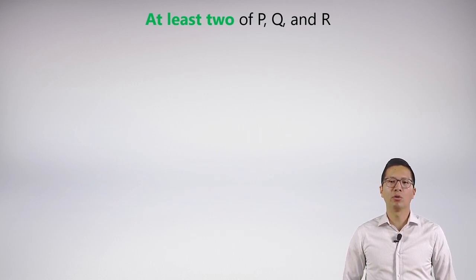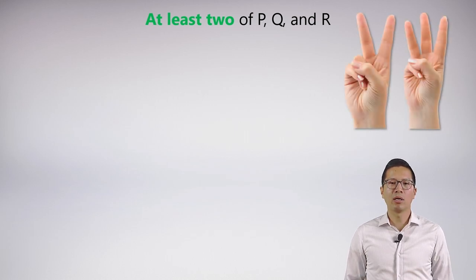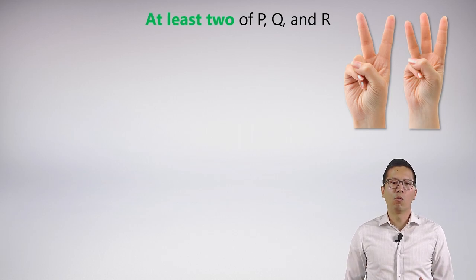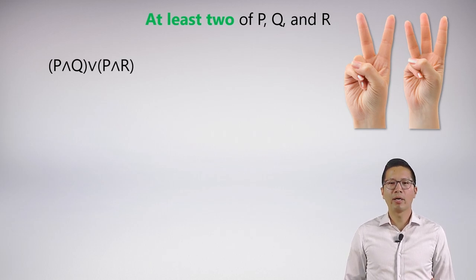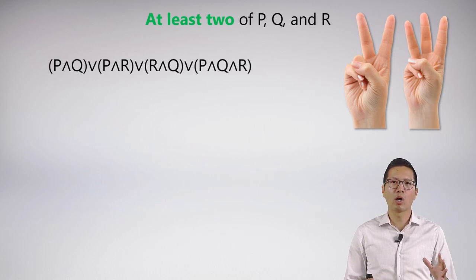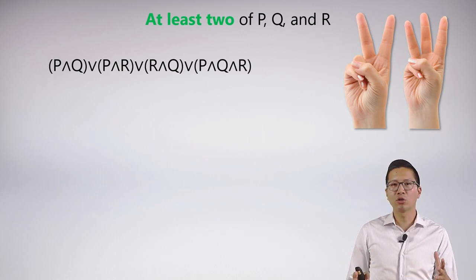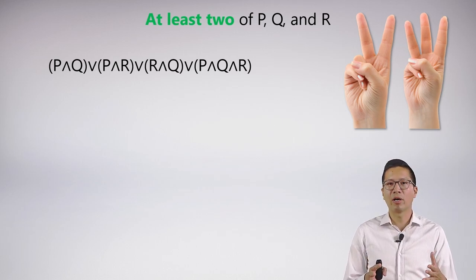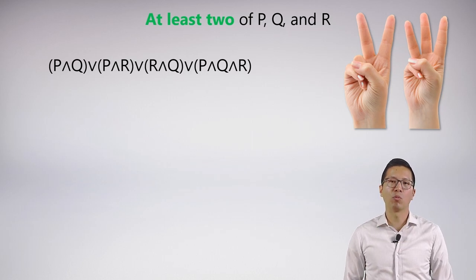Now let's do 'at least two of P, Q, and R.' The easiest way is to think about the cases this allows for. At least two means exactly two or all three could be true. So let's list: P and Q, or P and R, or R and Q, and we could also add the possibility that all three are true — P and Q and R. I put a disjunction between each because at least two doesn't specify which will happen; it just says one of these things will be true.